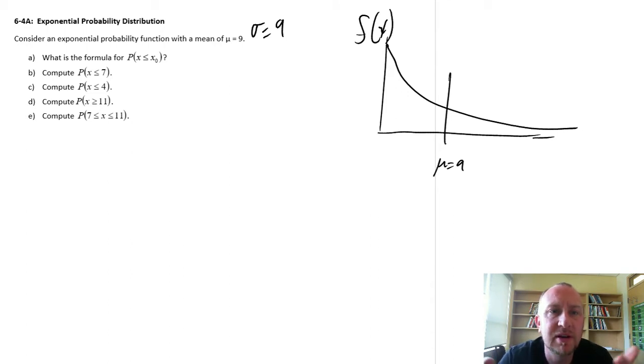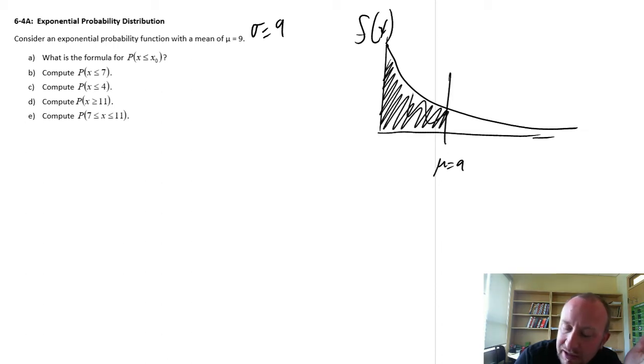We want to know what is the formula for specific probability. So we're looking for the cumulative probability function, the formula to calculate the area under a curve. Because like the other continuous distributions we've looked at, those probabilities are obtained by calculating the area within an interval, or the area under the curve within an interval.